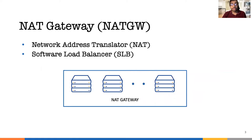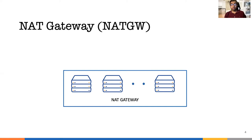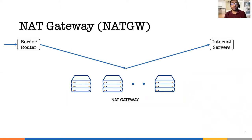It is entirely implemented at the software layer for ease of deployment to any virtual machine. NatGateways are placed between the border routers and the internal servers to distribute the workload among the servers and to translate the public IP address of a service into a local IP address of a server tasked to handle the request.